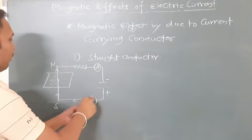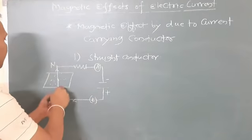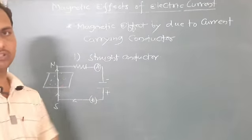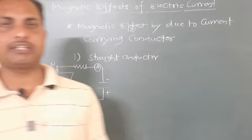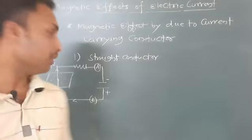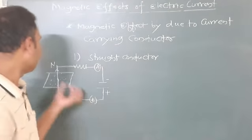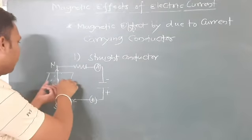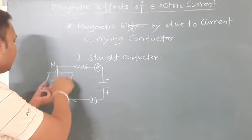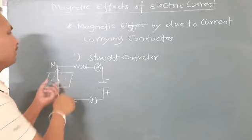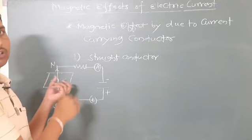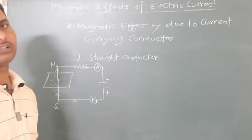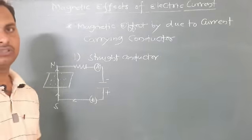I will start this key. Once I start this key, what will happen? The iron filings will get arranged themselves in concentric circles. Why does this happen?